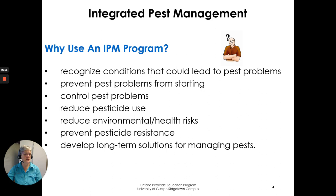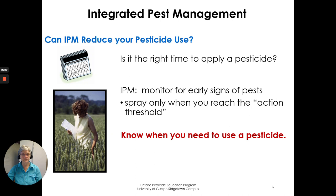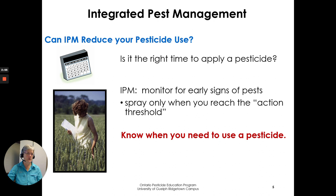You can develop long-term solutions for managing pests — it might not be the first or second year; maybe it takes three or four years to get a certain pest under control. Can IPM reduce your pesticide use? The first question you're going to ask is: is it the right time to apply a pesticide? Monitoring for your pests in your crop will give you an idea when you've reached the point where you have to take action. Some pests you can put up with a certain amount of damage, but monitoring is what will tell you when you need to use a pesticide.